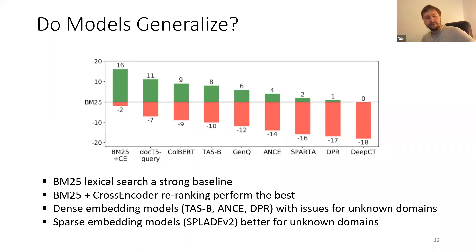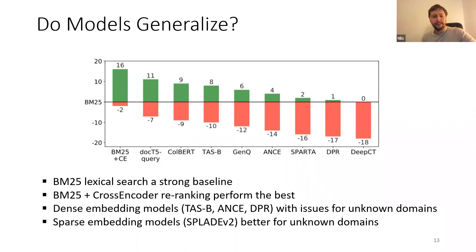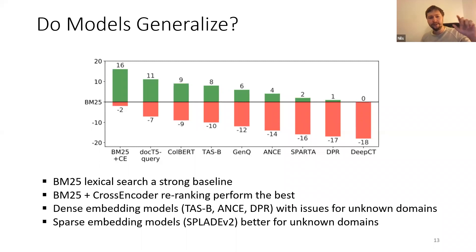This gave really interesting insights. First, that a lot of these dense embedding approaches have issues for unknown domains. A lot of research followed up on this. Also, some sparse embedding models like SPLADE work much better for unknown domains. Also, the best approach beyond BM25 was a cross-encoder with doc2query, which was extremely stable and robust across domains. This really led to an improvement of the models.